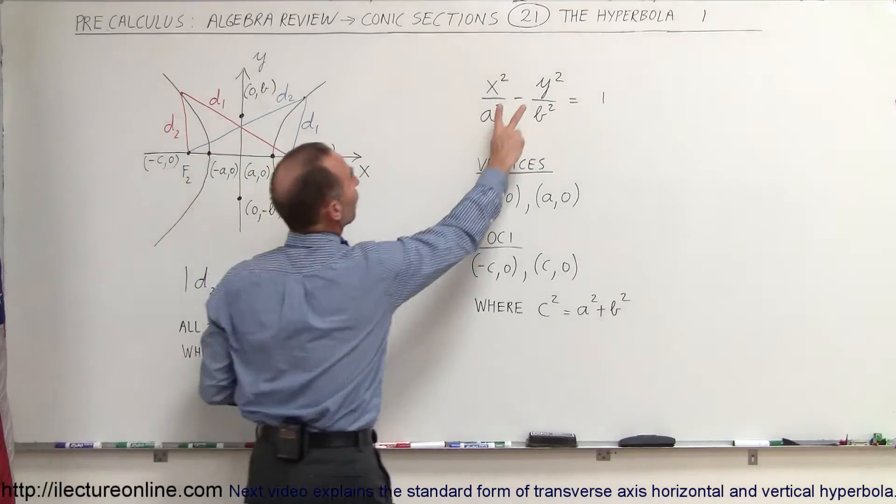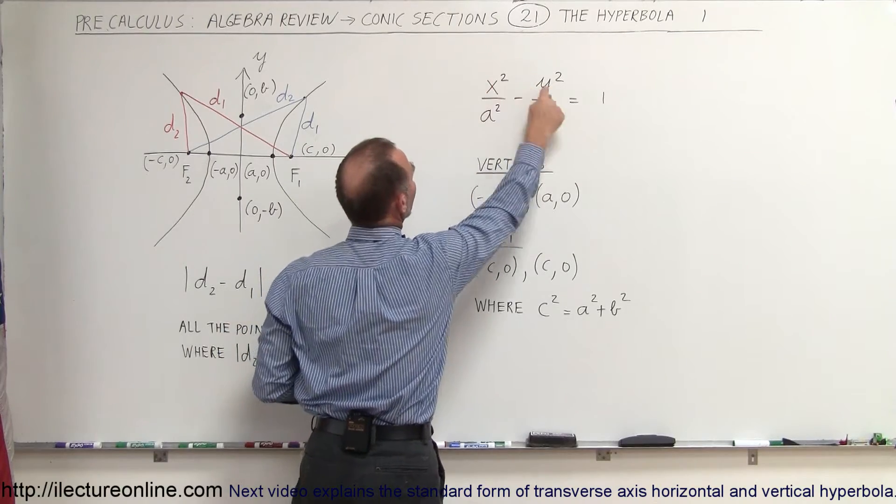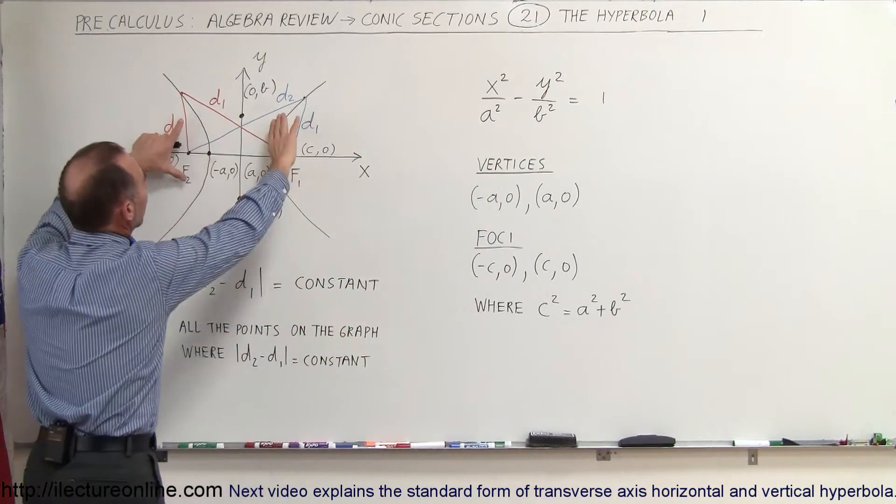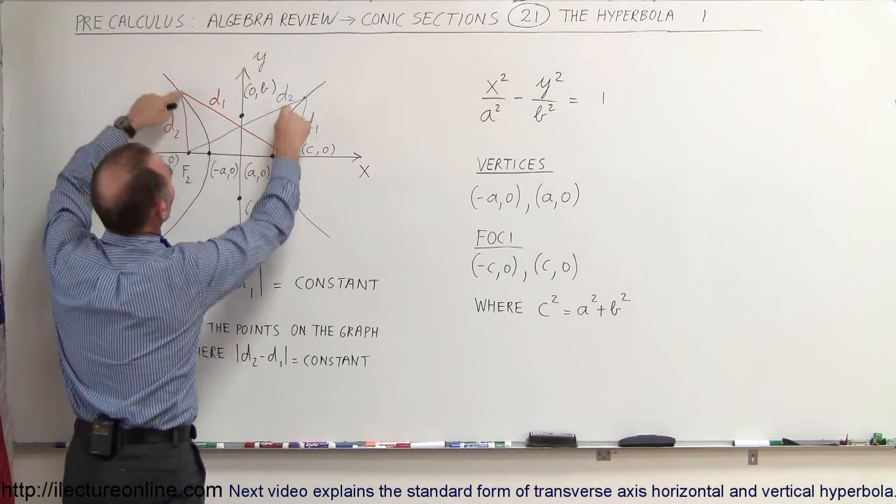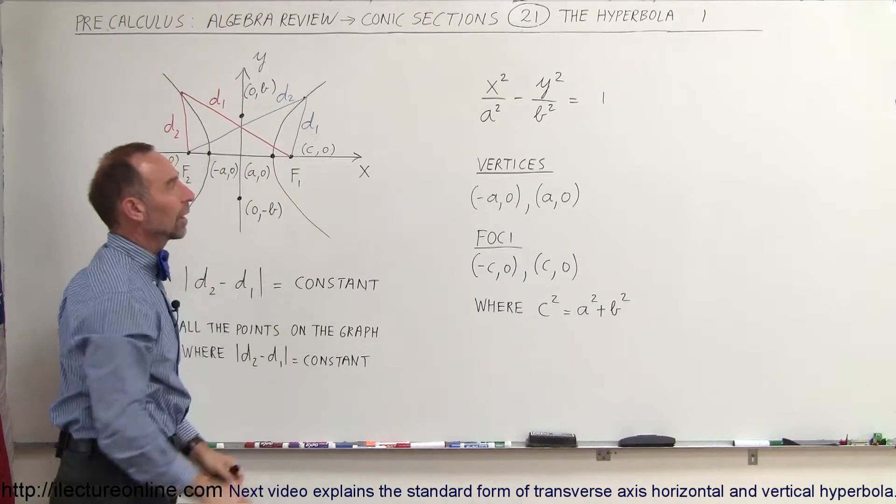Now if we have these two reversed, if you put the y first and the x second so that it's y² - x², then the hyperbola would be directed this way and I'll show in the next video what that looks like.